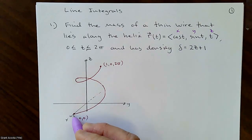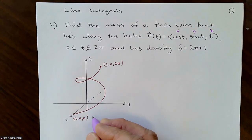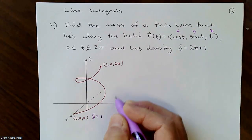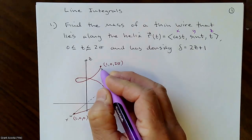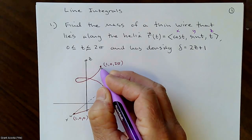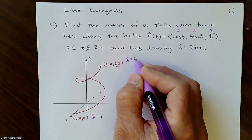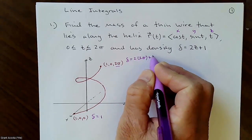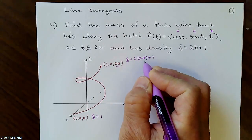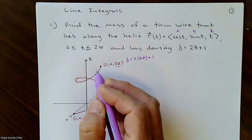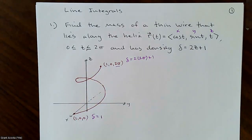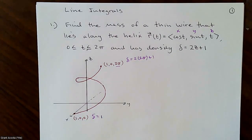Right here the z value is actually 0, so the density is 2(0) + 1 = 1. But up at the top, the z value is 2π, so the density is 2(2π) + 1, which is a much bigger density. You can picture this wire as getting very heavy at the top, very light at the bottom. We want to find the mass of this.